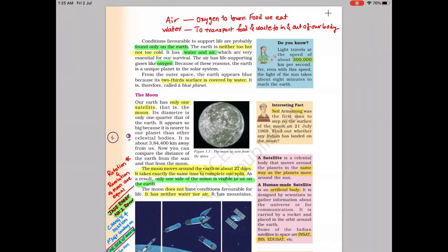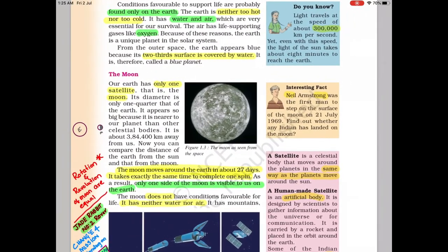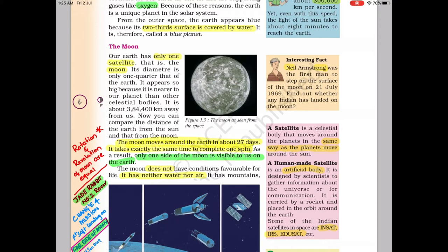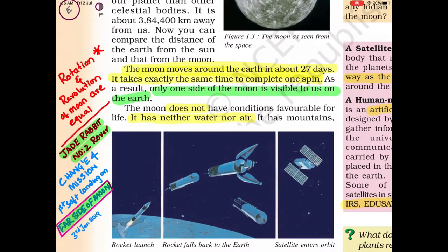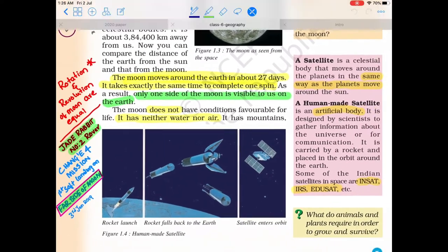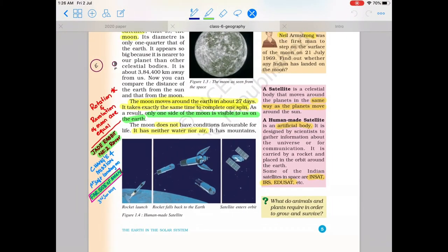Earth has only one natural satellite, that is the Moon. Interestingly, the Moon's rotation and revolution periods are both approximately 27 days. Because of this equality, we can't see the far side of the Moon. An important current affairs topic is the Jade Rabbit-2 rover, part of China's Chang'e 4 mission, which made the first soft landing on the far side of the Moon on 3rd January 2019. Artificial satellites like INSAT, IRNSS, EDUSAT also revolve around Earth.